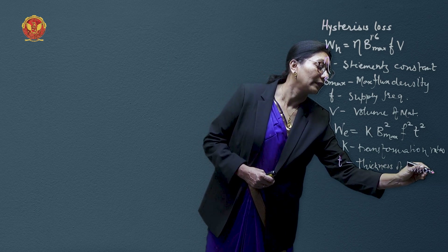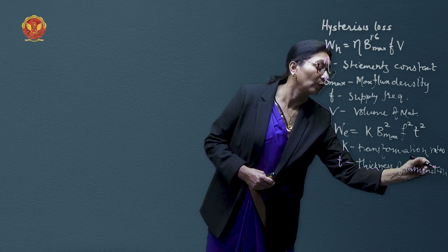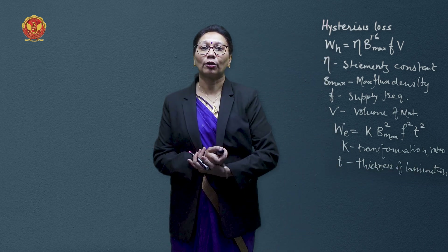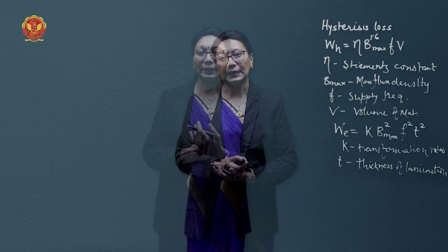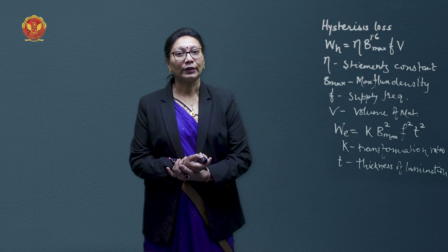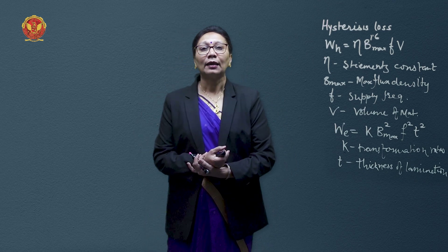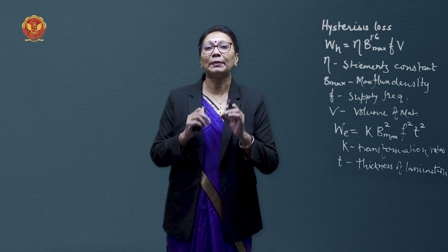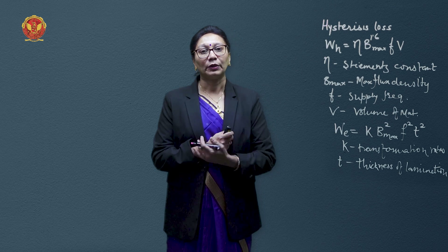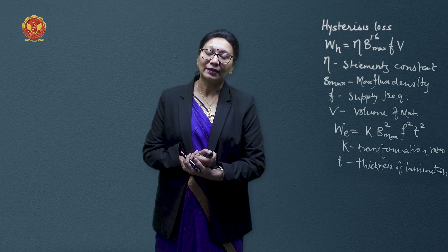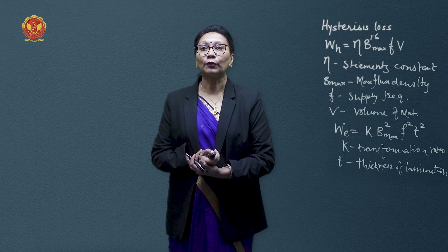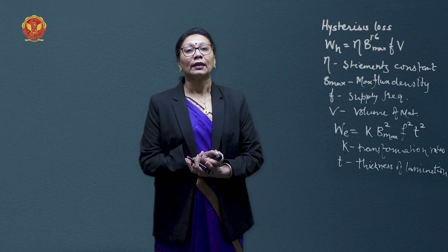To avoid these losses in the iron core, normally the transformer core is made of high quality iron or steel — it could be cold rolled grain oriented steel — plus the thickness of the laminations are reduced with insulation layers in between, so that eddy currents are also reduced.